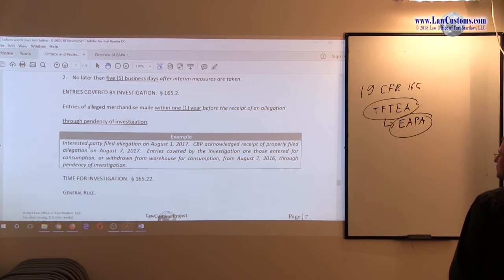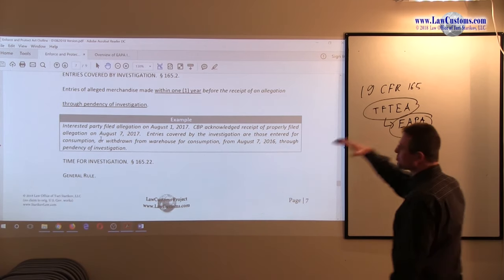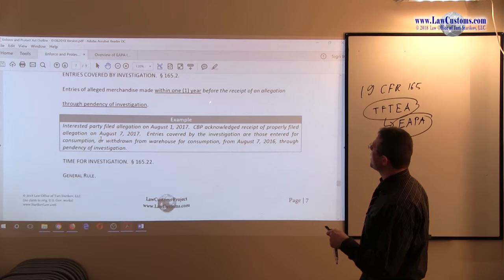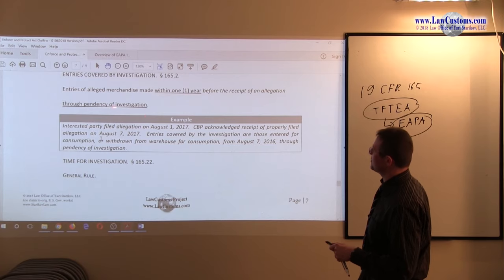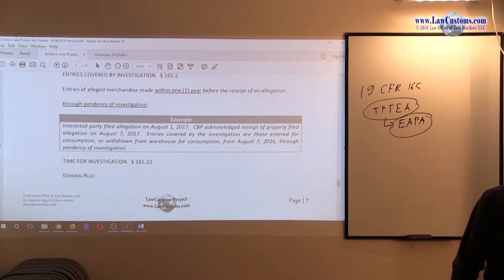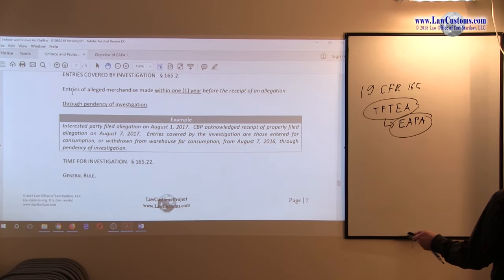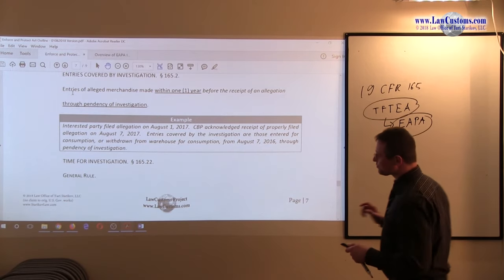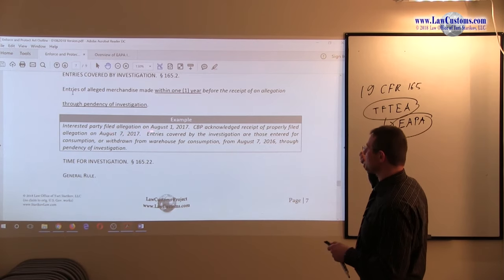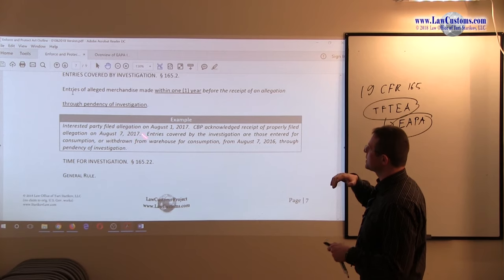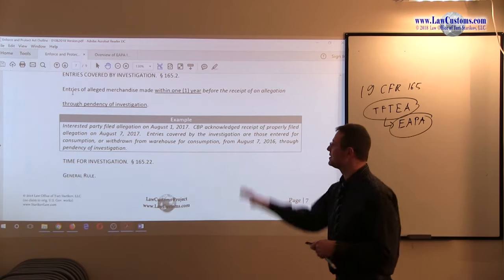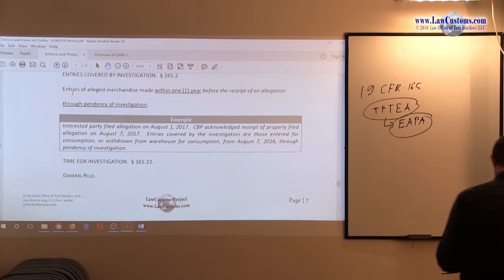Who is covered by investigation? I am sorry, what is covered by investigation? Well, in other words, how far can you reach back for those entries? Well, one year rule, and one year rule before the receipt of allegation through pendency of investigation. So, while investigation is going, and we talked about this 300 plus 60, plus possible 60 days, right? While this is going, plus one year. As an example, and this is taken from the real letter. Interested party file allegation on August 1st. CBP acknowledged the receipt of property, so everything was done correctly, on August 7th. Do you go back one year from August 1st or August 7th? You go back from August 7th through pendency of investigation. Just to drive a point home, I think that example would be helpful.